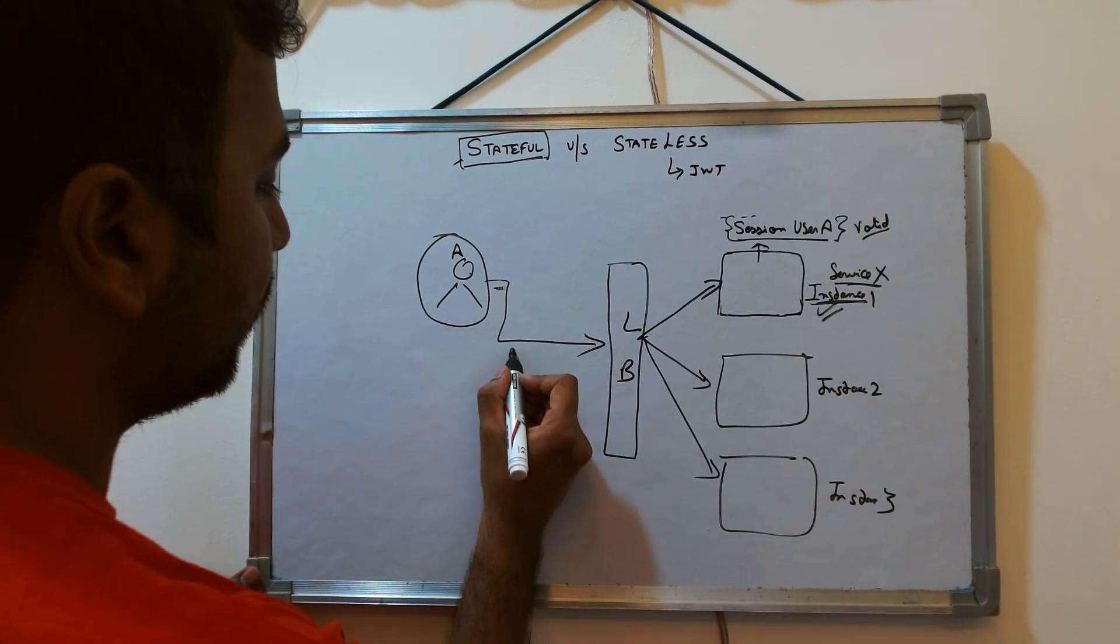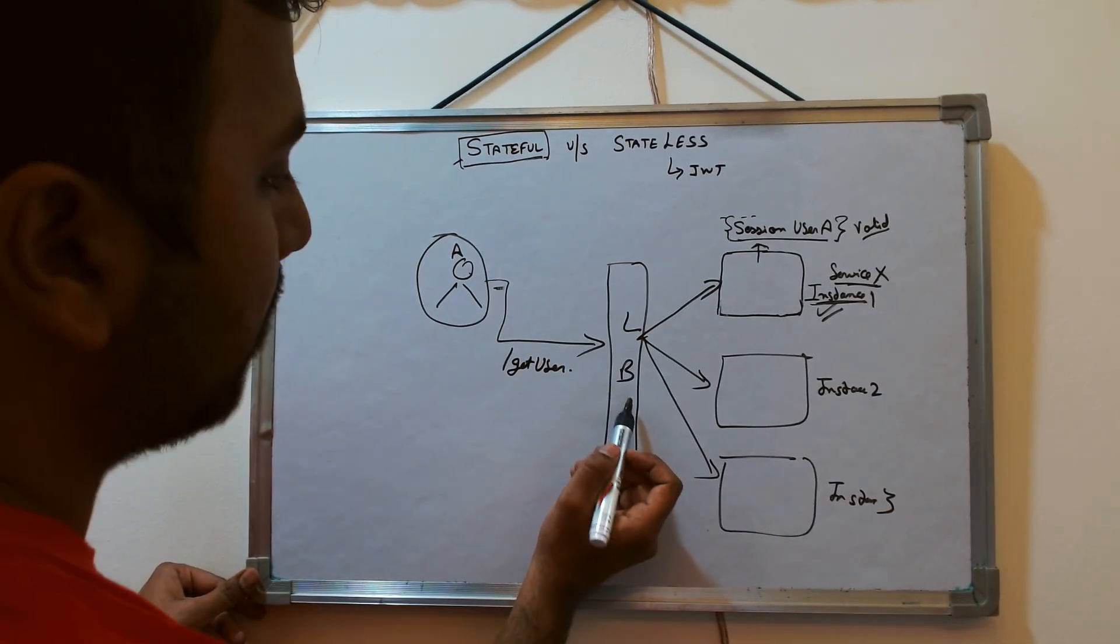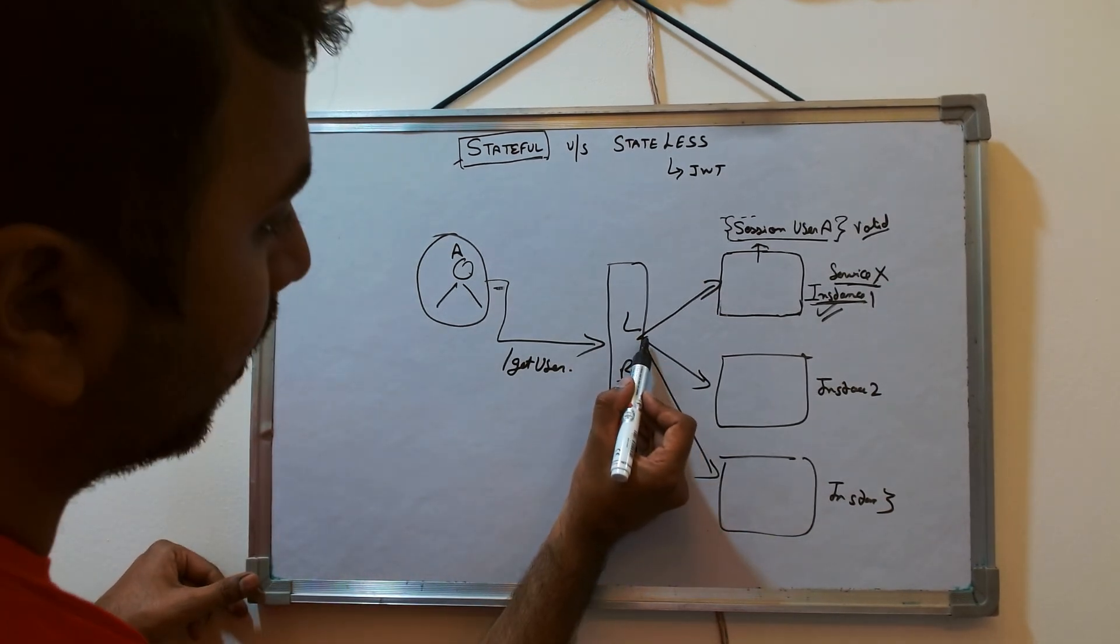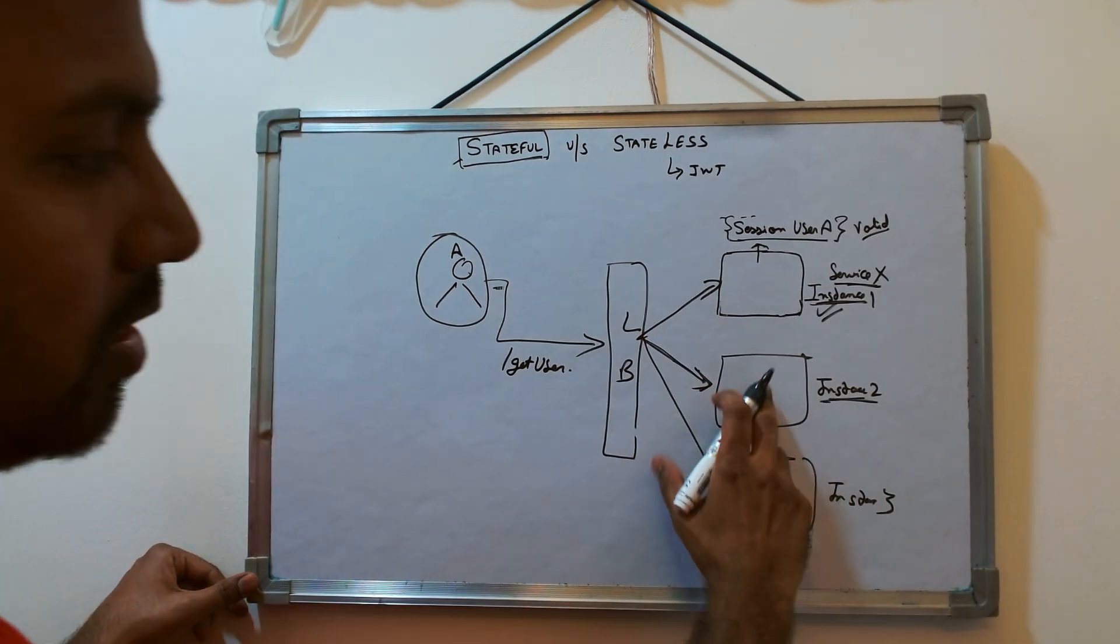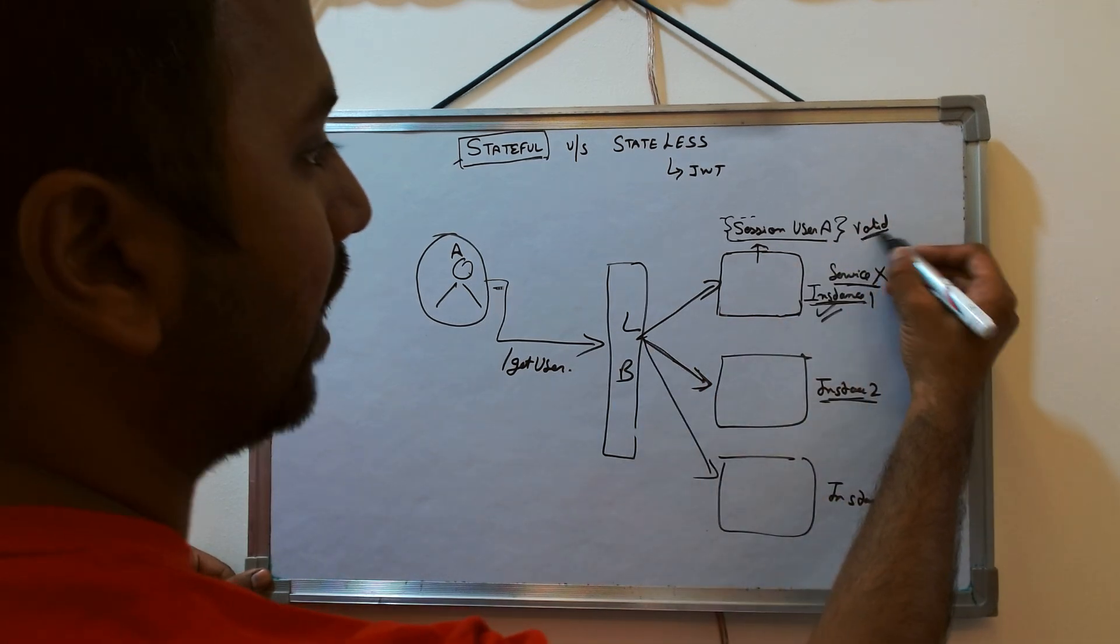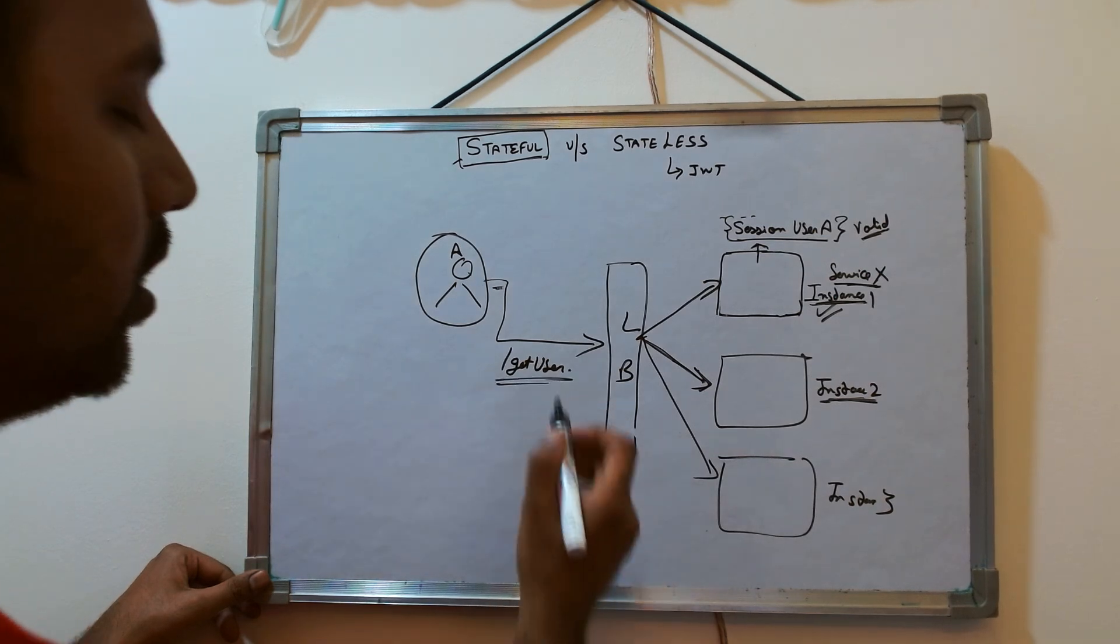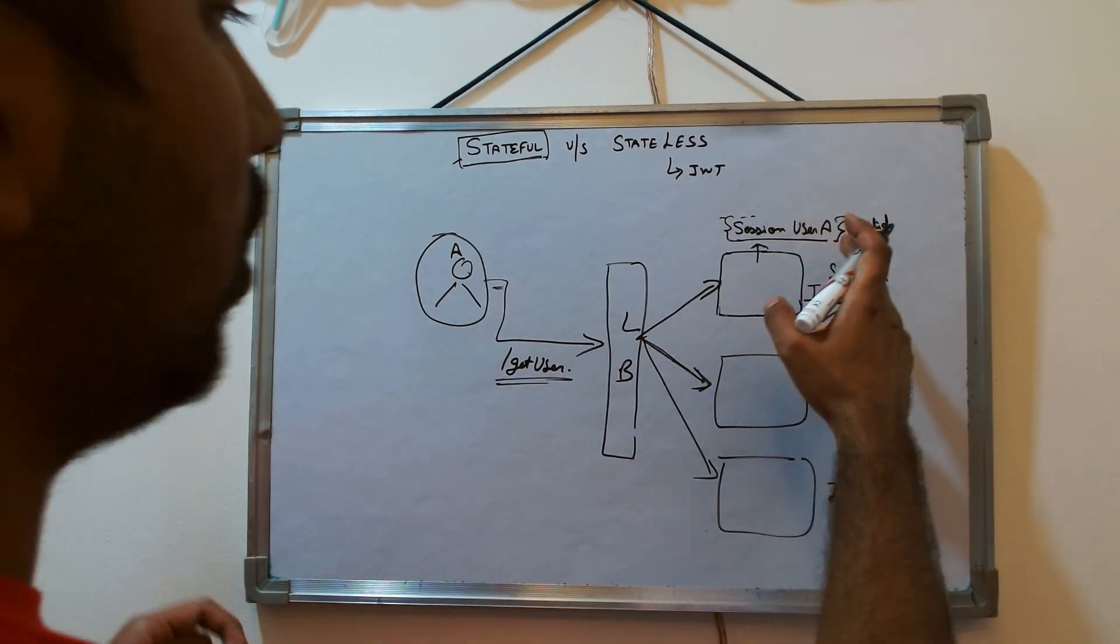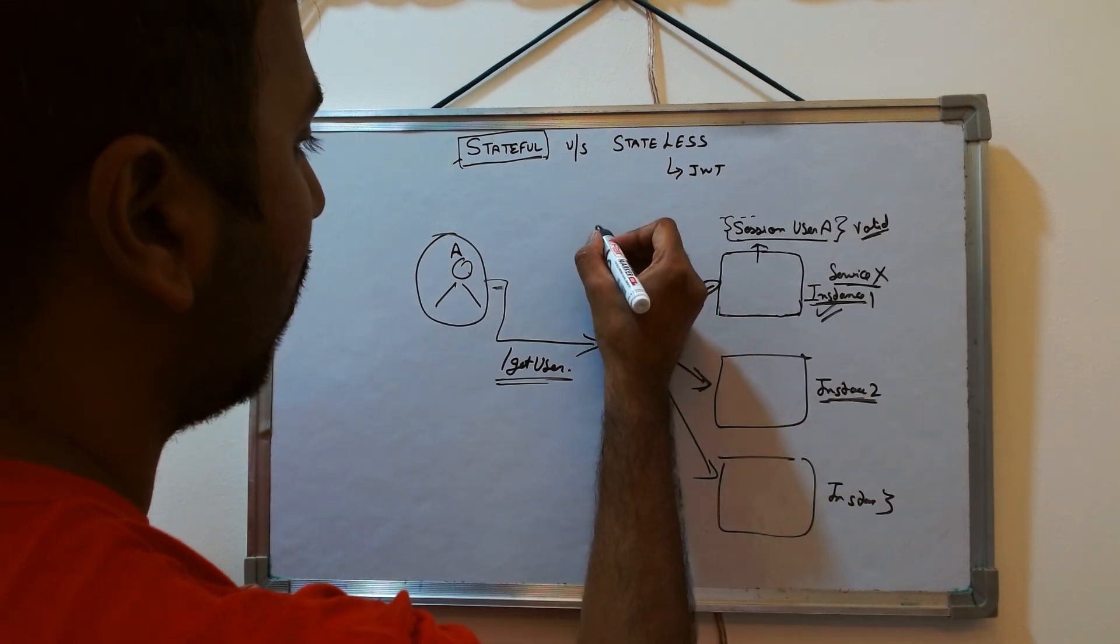Now if user A says hey get me the details of users, let's say now this load balancer if now moves the request to this instance two, does instance two know whether the user A session is valid or not? Instance two would not be able to fulfill this request because it doesn't know that the session is valid or not for this user. So that's where the feature something called as sticky session.